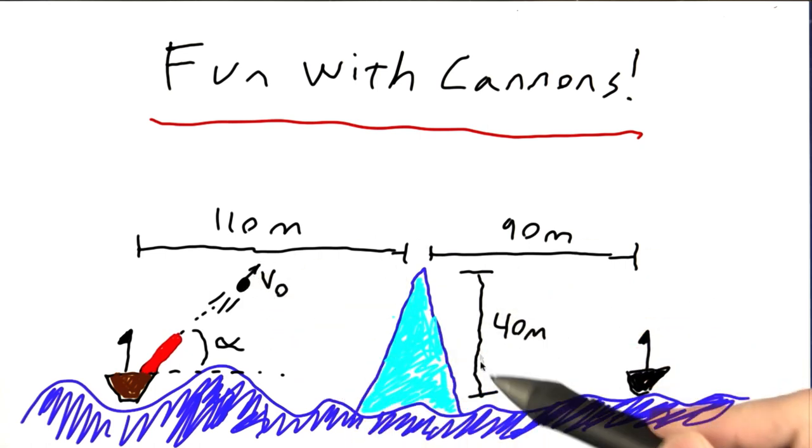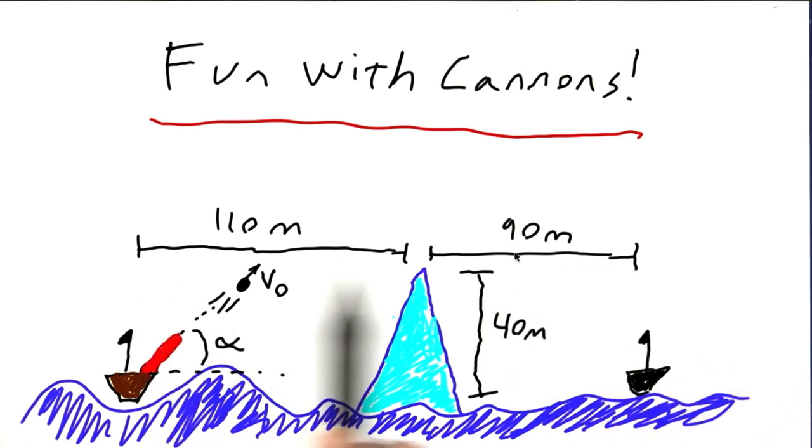Unfortunately, there's this 40-meter tall iceberg about 110 meters away from you, which makes your shot a lot more difficult because you have to go over the iceberg. So what angle alpha and initial speed, V0, should you use such that you hit the enemy ship? Now there are actually a lot of answers here, but we're just looking for one that works. One that works will hit the enemy ship and not hit the iceberg.